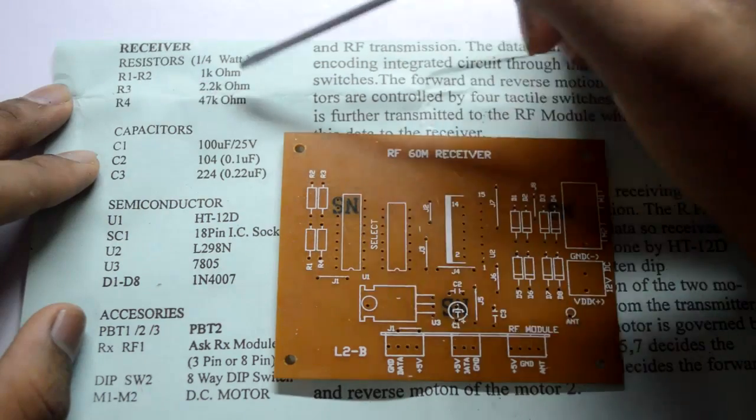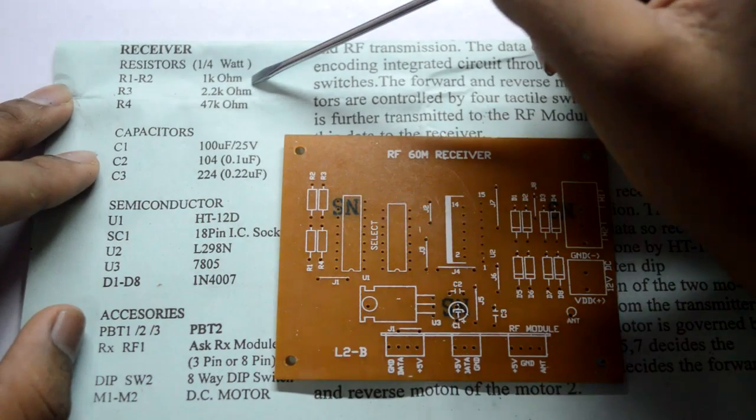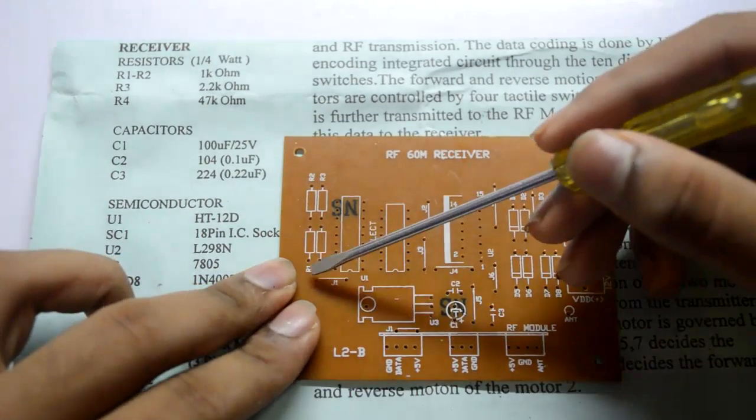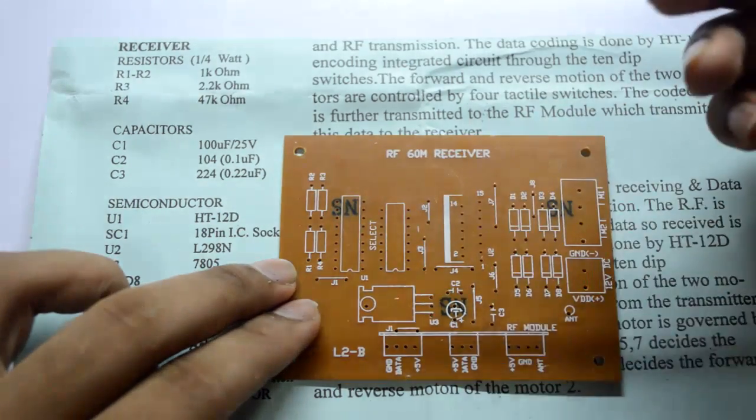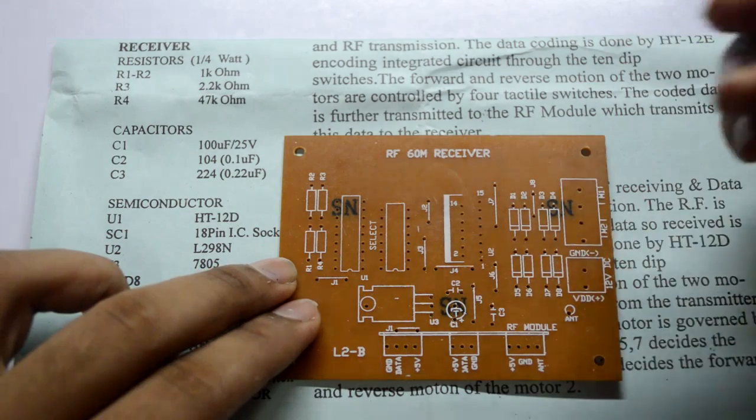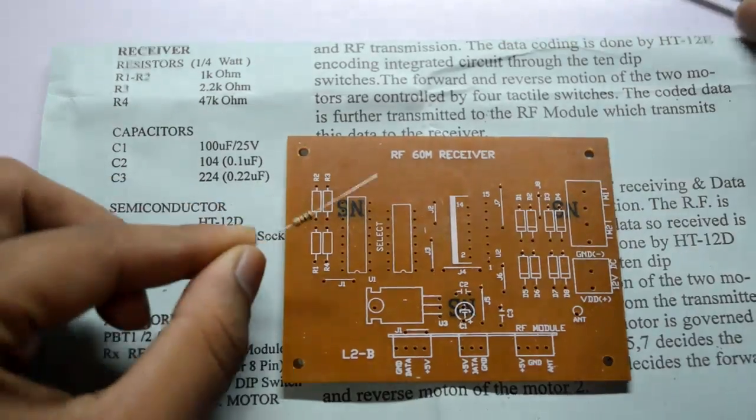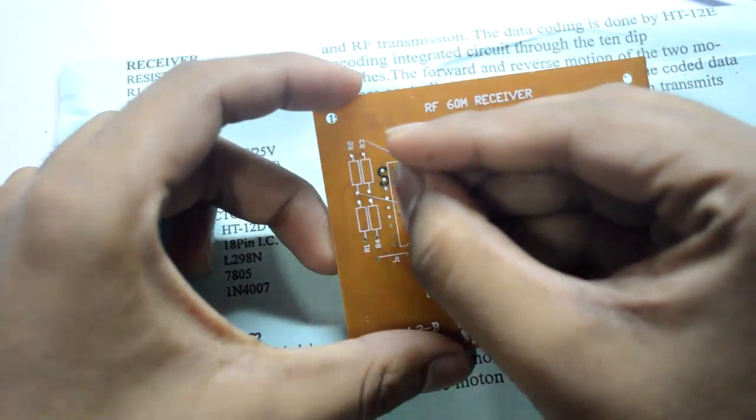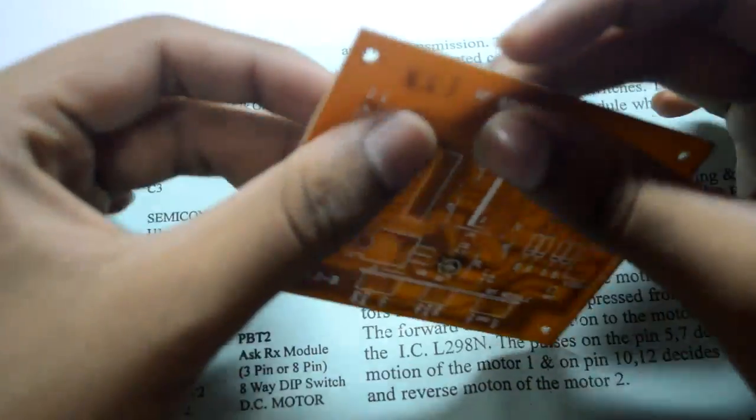They say that R1 and R2 is of 1 kilo ohm, it is one fourth of a watt. So go ahead and find a resistor of 1 kilo ohm and place it right here because this is R1 and this is R2. With the help of the famous resistor color code chart, go ahead and determine which resistor is of 1 kilo ohm, bend its legs and insert it right away.